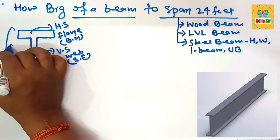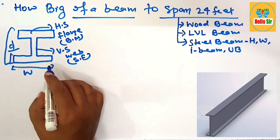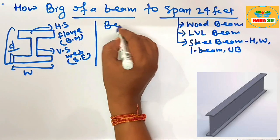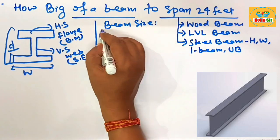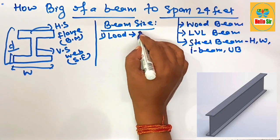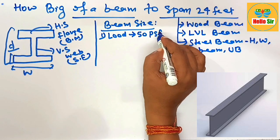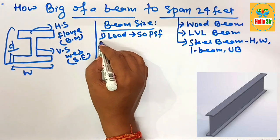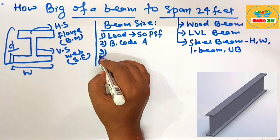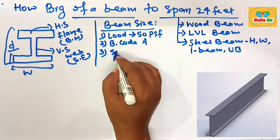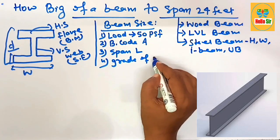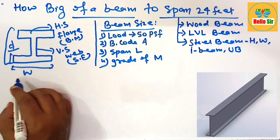This shows the total depth of the American wide flange beam. The beam size depends on many factors: the load condition (typical residential load is about 50 pounds per square foot, consisting of dead load and live load), the building code in your area, the span length, and the grade of material used to form the beam structure.